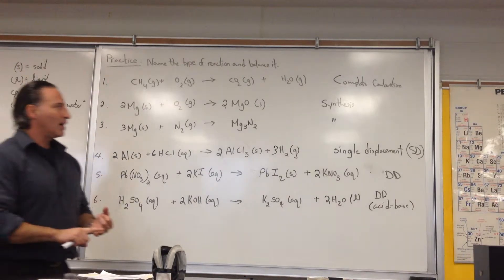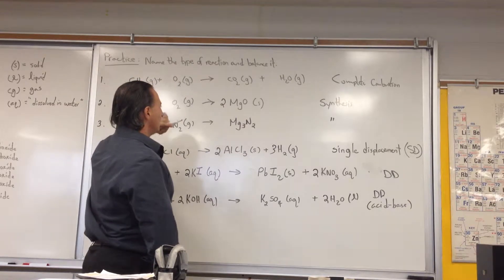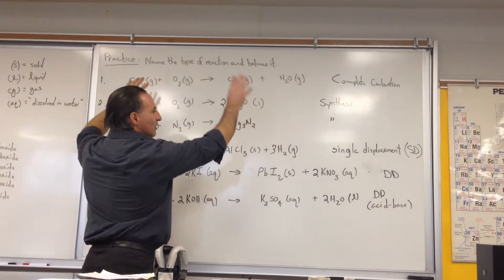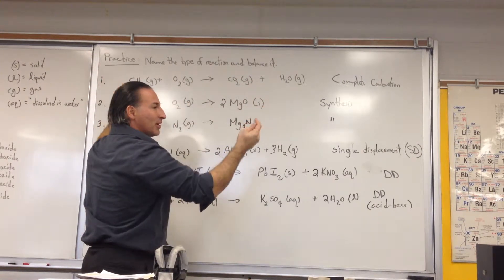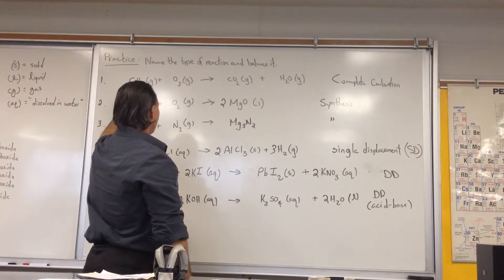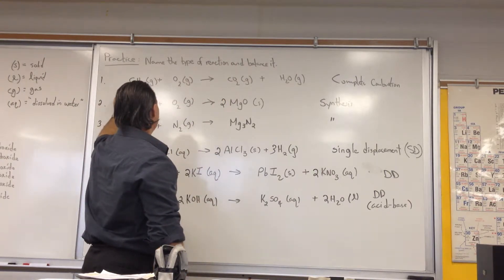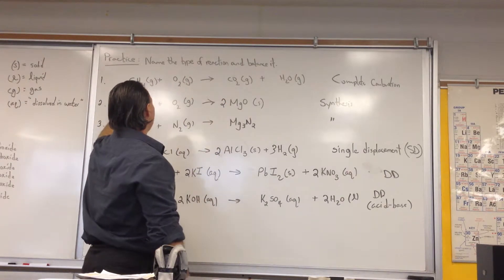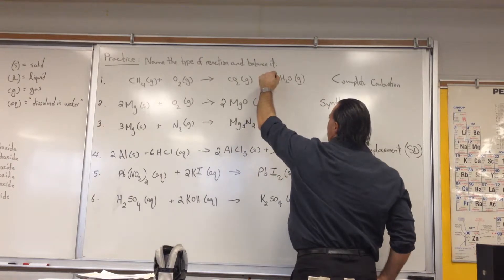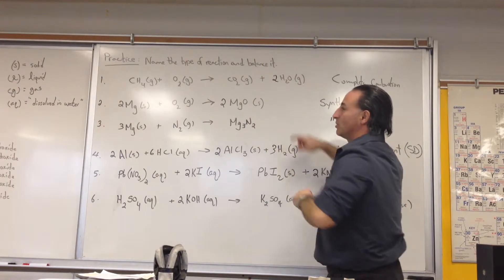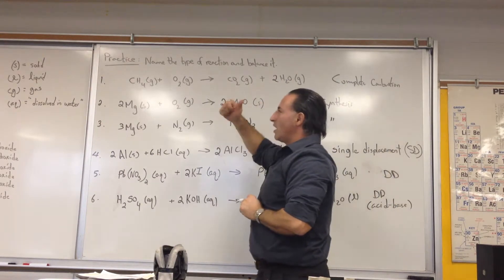The way you balance combustion reactions is very simple: you do it alphabetically. First carbon, then hydrogen, then oxygen. So we look at carbon on the left side - the reactants. There's one carbon atom on the left, so there has to be one carbon atom on the right. There's four hydrogen atoms on the left, so you have to have four hydrogen atoms on the right. And the way you can accomplish that is by putting a two in front of the water.